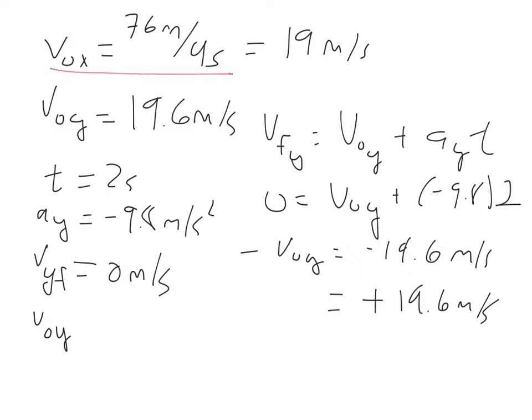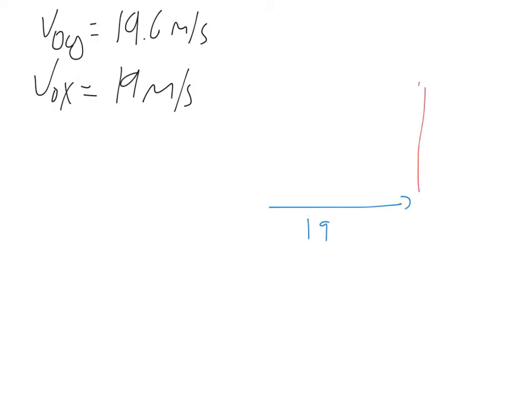So these are my starting velocities. V0y, 19.6 meters a second. V0x equal to 19 meters a second. In other words, this acts like a triangle. My x velocity is 19 meters per second and my y velocity, at least at launch, is 19.6 meters a second. So, almost 45 degree angle. So we know if we do the math right, we're close to 45 degrees. I need to find theta.